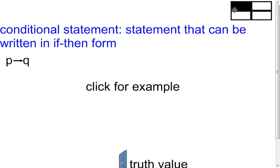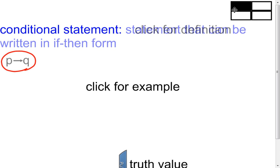Right next to 'conditional statement,' on the outside, write 'a statement that can be written in if-then form,' because that's what a conditional statement is. Notice 'statement' is still in there — something that can be either true or false, as we talked about in an earlier lesson. Also put on the front cover this notation. As mathematicians we like to shorten things up, so this notation says if-P then-Q, written as P arrow Q, in if-then format with two parts.